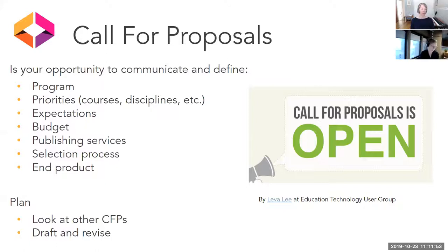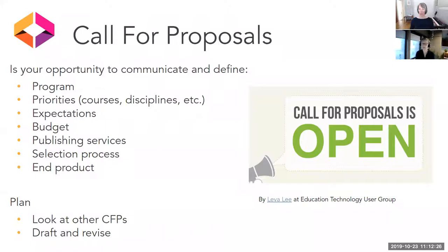In your call for proposal, it's really important to be clear and provide detailed information about what courses or disciplines your publishing program will be targeting. You'll also want to communicate funding and budget models — for example, will you be offering a course buyout? You'll want to include what publishing services your program will offer, the criteria for how proposals will be selected, and your expectations for what the end product will look like.